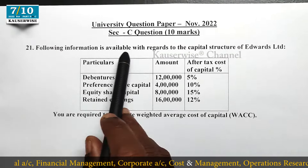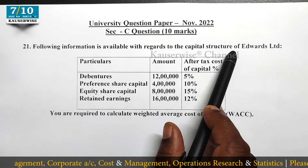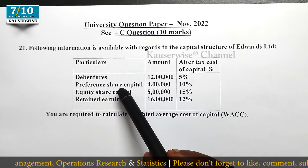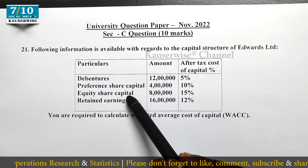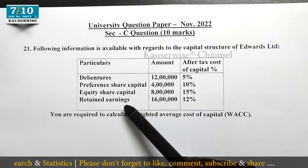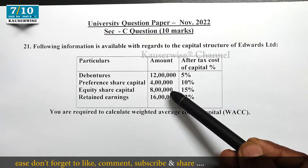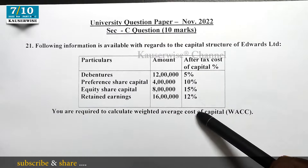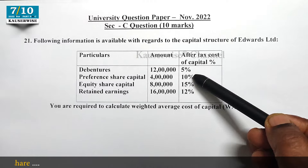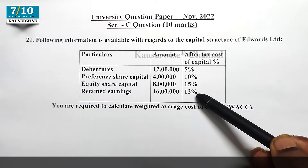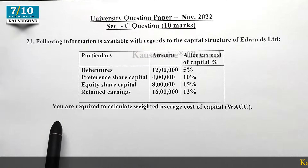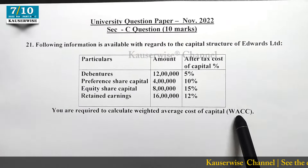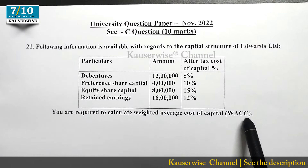The following information is available with regards to the capital structure of Edwards Limited. The capital structure includes debentures, preference share capital, equity share capital, and retained earnings. The amounts given are 12 lakhs, 4 lakhs, 8 lakhs, and 16 lakhs. The after-tax cost of capital percentages are 5%, 10%, 15%, and 12% respectively. With this information, they are asking you to calculate the Weighted Average Cost of Capital, that is WACC.